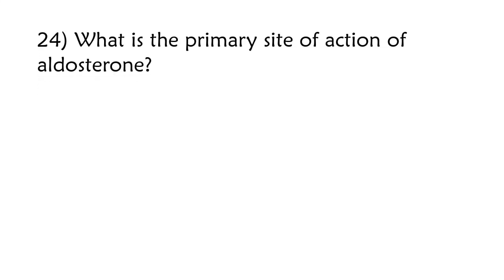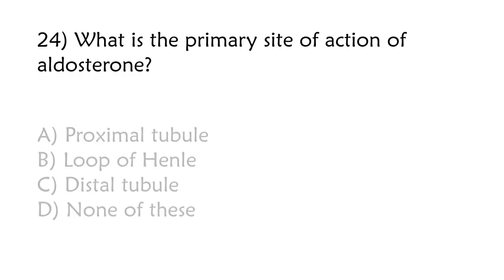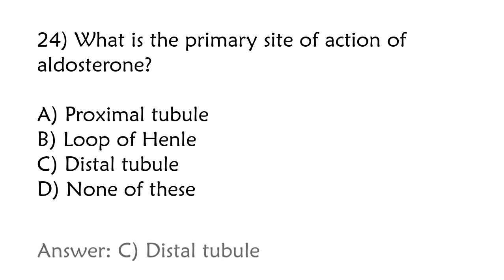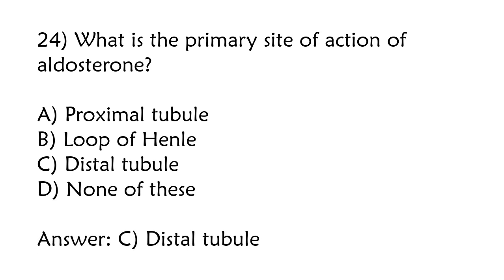What is the primary site of action of aldosterone? Proximal tubule, Loop of Henle, Distal tubule, None of these. The correct answer is Option C: Distal tubule.